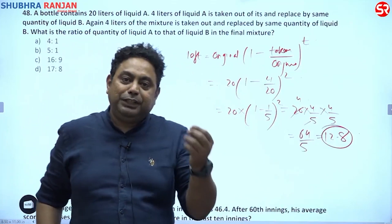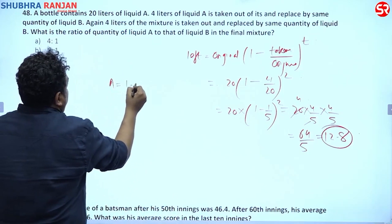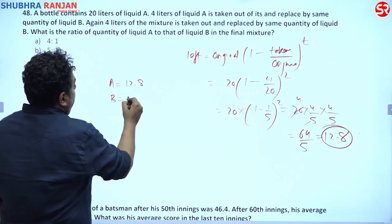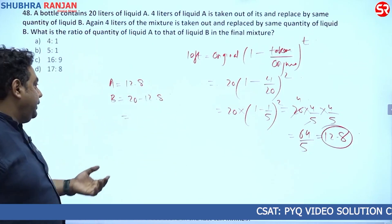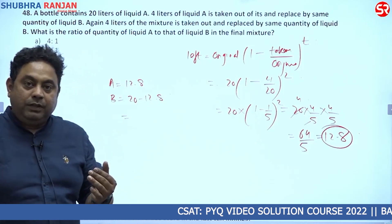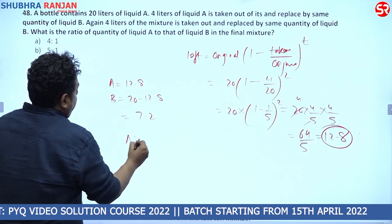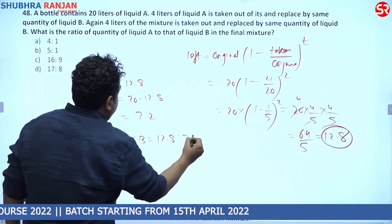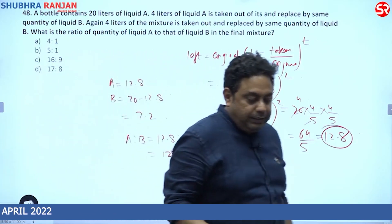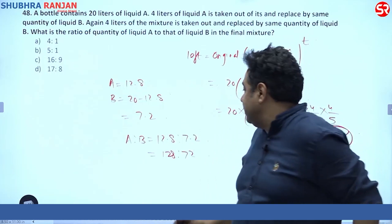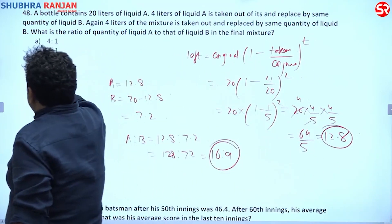So liquid A is left with 12.8 liters after two processes. Liquid B = 20 − 12.8 = 7.2 liters. So A : B = 12.8 : 7.2 = 128 : 72 = 16 : 9.